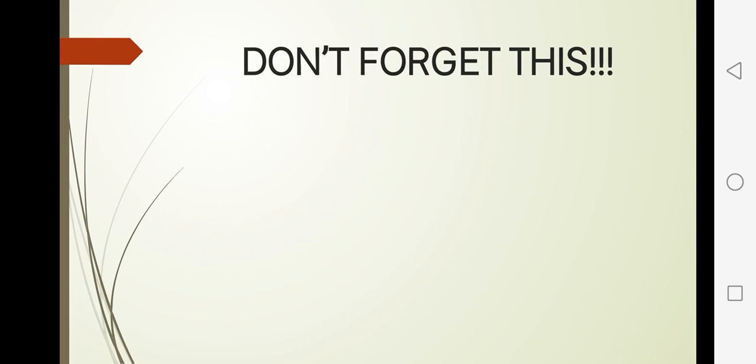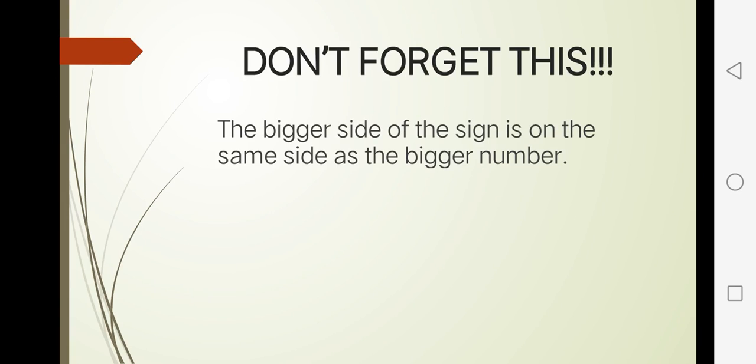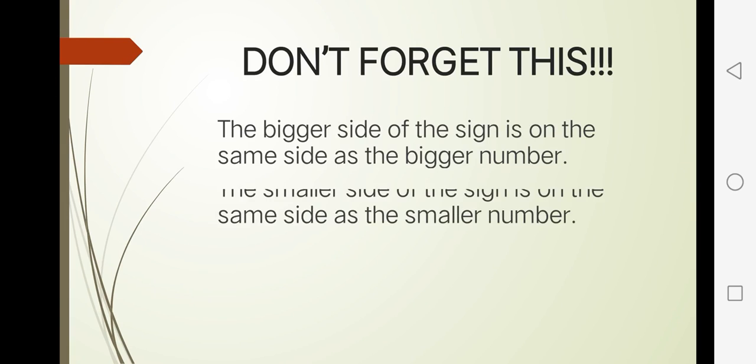Don't forget this. The bigger side of the sign is on the same side as the bigger number, and the smaller side of the sign is on the same side of the smaller number. For example, 9 is less than 18, or negative 2 is greater than negative 7.